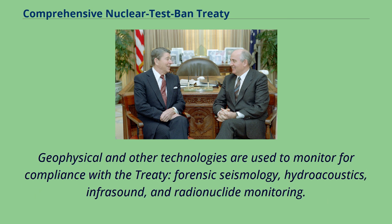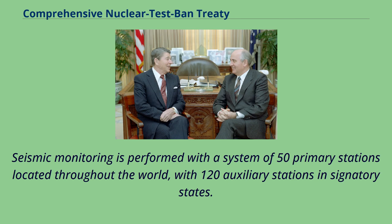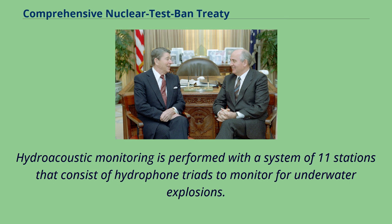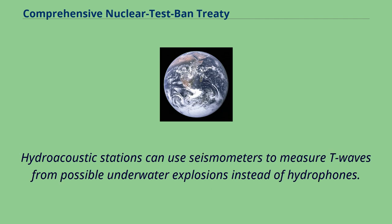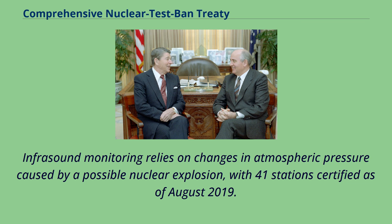Geophysical and other technologies are used to monitor for compliance with the treaty: forensic seismology, hydroacoustics, infrasound, and radionuclide monitoring. The first three forms of monitoring are known as waveform measurements. Seismic monitoring is performed with a system of 50 primary stations located throughout the world, with 120 auxiliary stations in signatory states. Hydroacoustic monitoring is performed with a system of 11 stations that consist of hydrophone triads to monitor for underwater explosions. Infrasound monitoring relies on changes in atmospheric pressure caused by a possible nuclear explosion, with 41 stations certified as of August 2019.